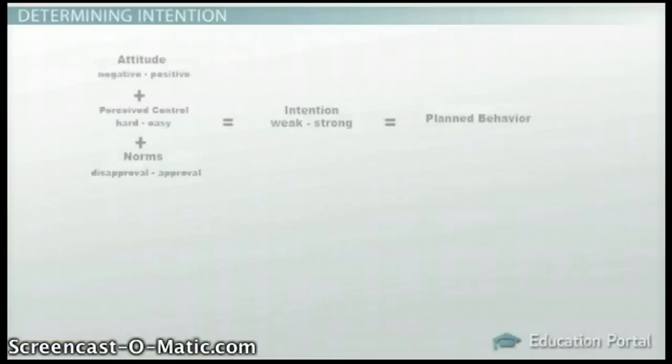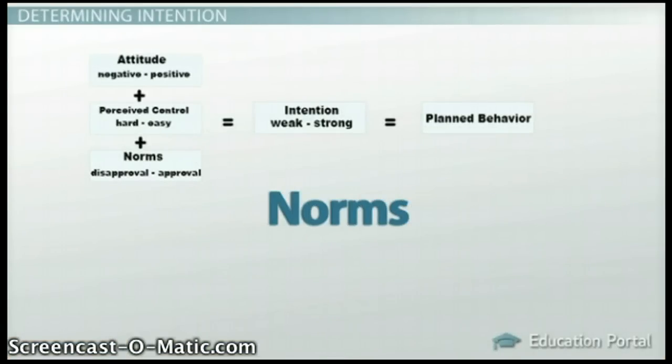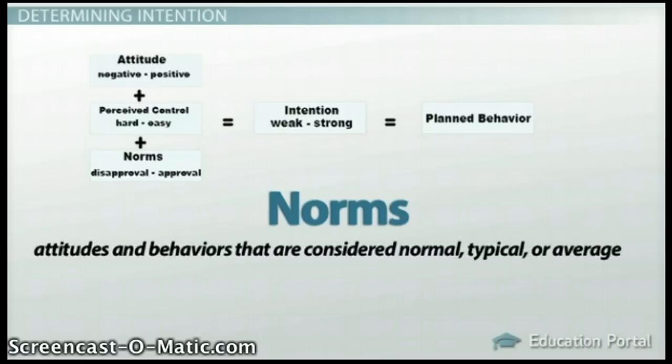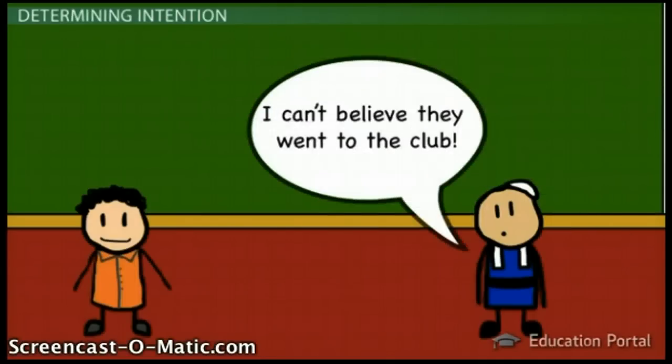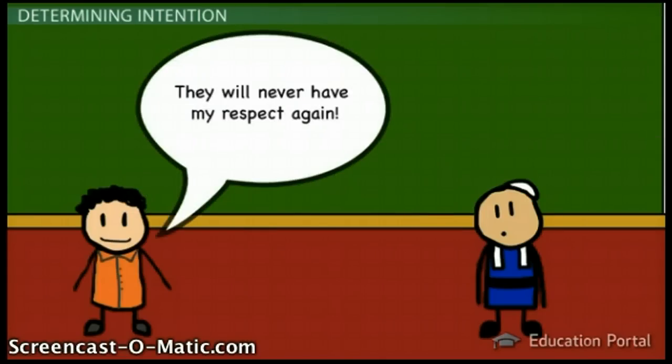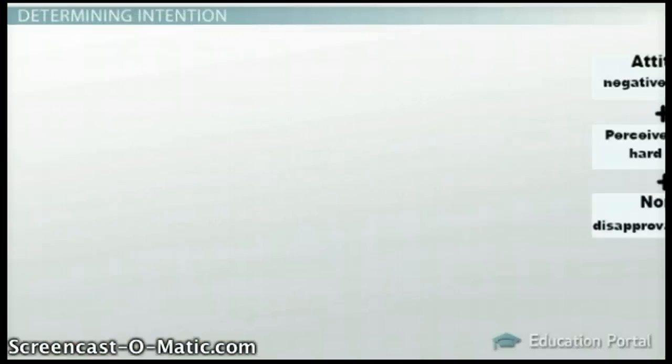Third is one's subjective norms. Norms are attitudes and behaviors that are considered normal, typical, or average. They determine others' approval or disapproval of the behavior. What would others think if you went to the club? Is it considered taboo? How would your reputation be affected?